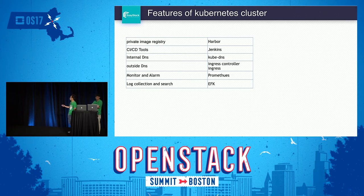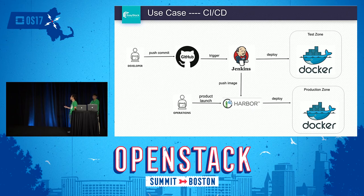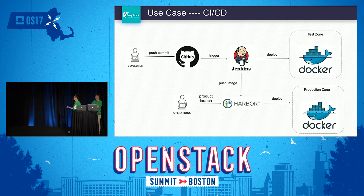This is a typical CI/CD use case. Developers make a code change and push the commit to GitHub. This triggers a Jenkins job to build a new image and deploy it into the test zone using that image. After testing, if everything is okay, operators use the image to launch the application into the production zone. This is a very common use case, and these are the features needed to support a container platform.